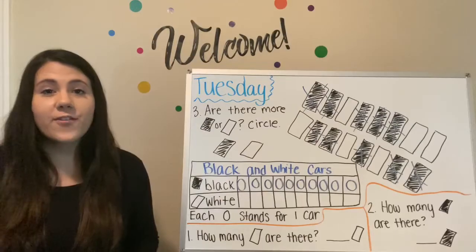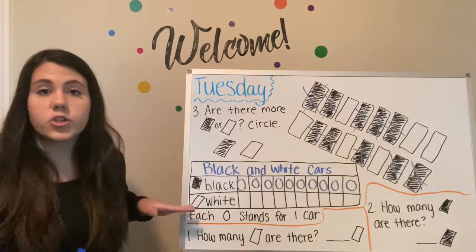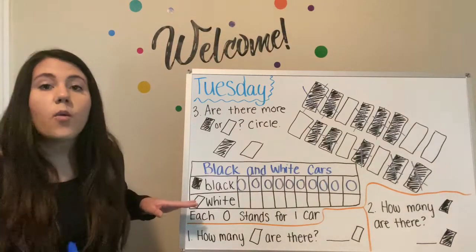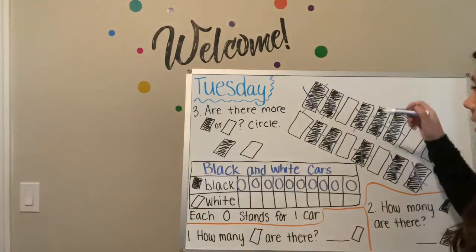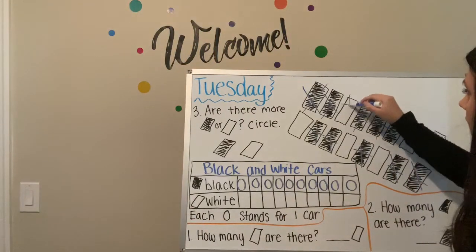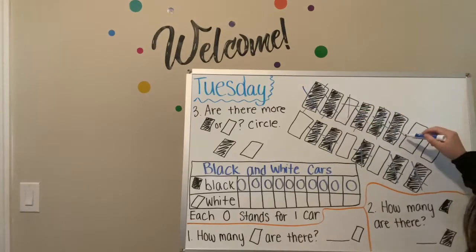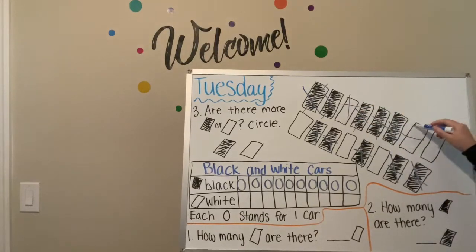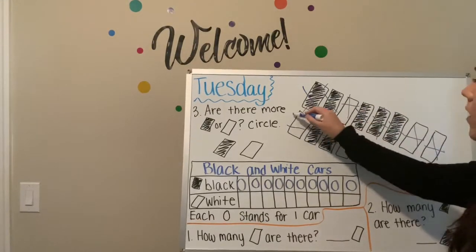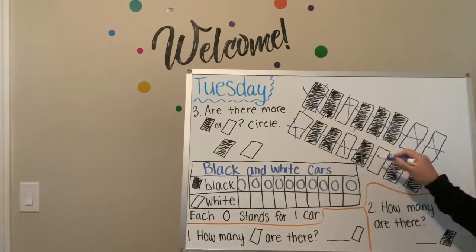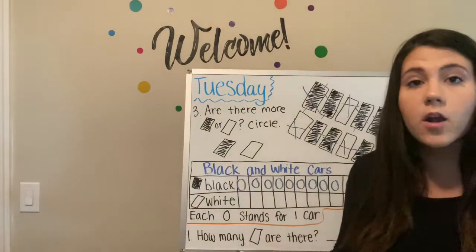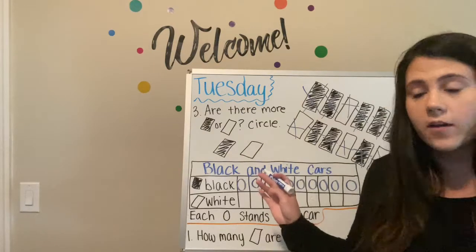Now we're going to fill in the next part — how many white cars do we see? We're going to cross them out again. Count with me: one, two, three, four, five, six. So we have six white cars.